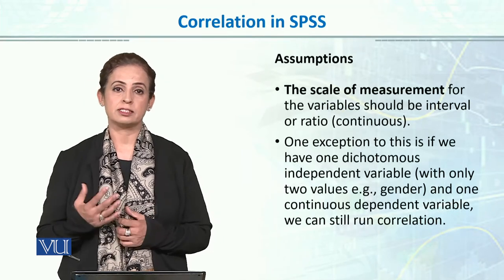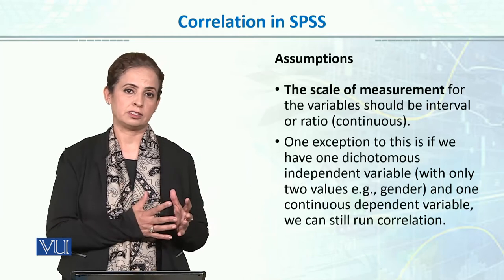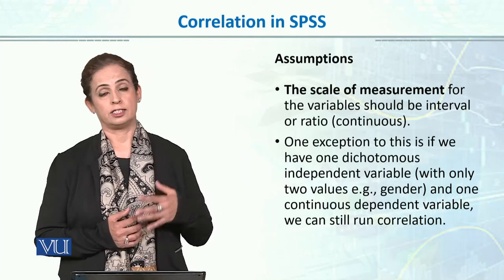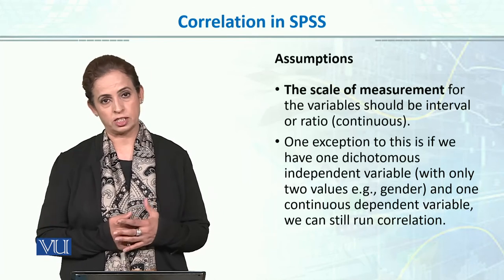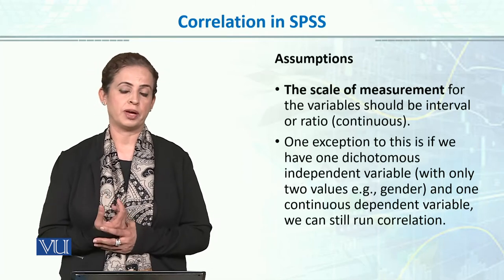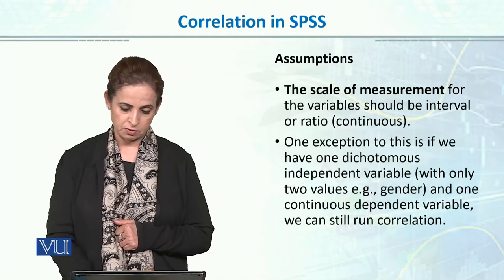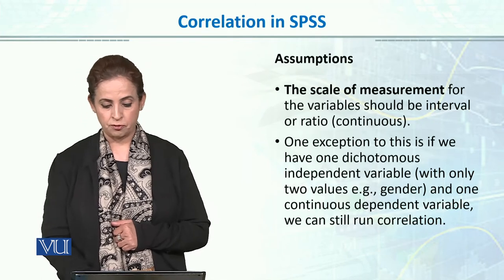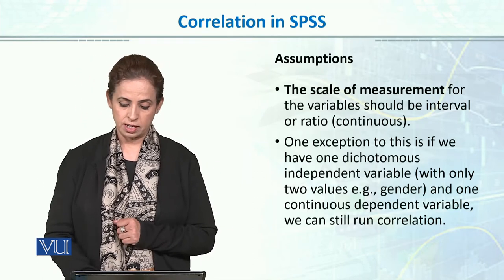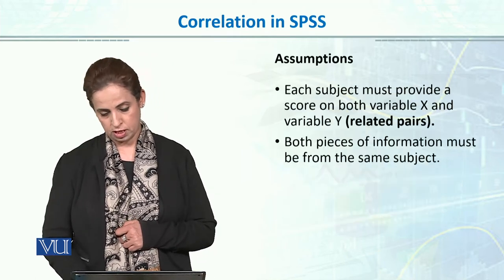Now we will talk about the assumptions we use for correlation. For each statistical test — such as T-test, ANOVA, or correlation — there are certain assumptions. The first assumption is the scale of measurement: for Pearson product moment correlation, data must be continuous or interval. One exception is that if we have one dichotomous independent variable and one continuous dependent variable, we can still use Pearson correlation.